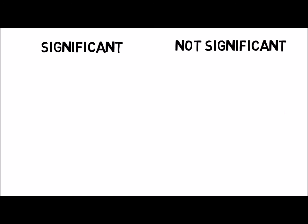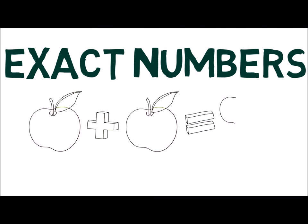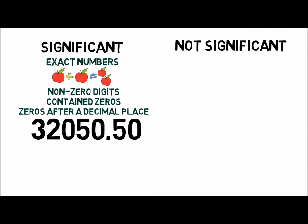There are guidelines for determining the significant figures of a number. Exact numbers have no uncertainty and an unlimited number of significant figures.